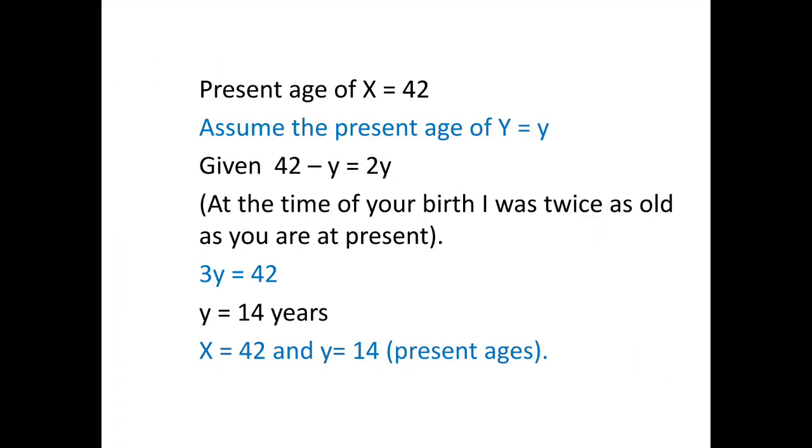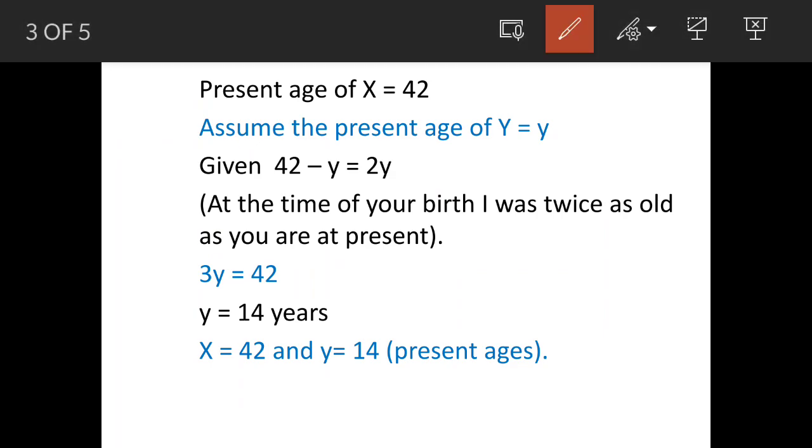Let's assume, the age of X is given as 42 years and present age of Y is y. So the statement is given, at the time of your birth I was twice as old as you are at present. So we form this equation: 42 minus his present age becomes 2y.